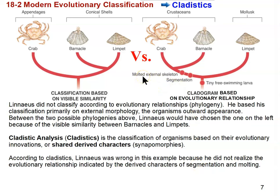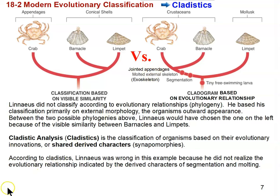The molted external skeleton is also known as an exoskeleton, and I want to introduce that term because we're going to be studying arthropods like crabs and barnacles. They all have an external skeleton — an exoskeleton — and they also have jointed appendages. But Linnaeus would not have considered that. He would have only considered their outward appearance, their general external morphology, and would have classified them as more closely related to each other.